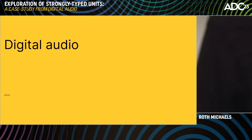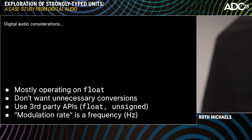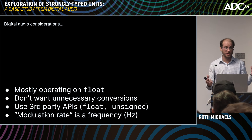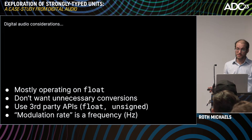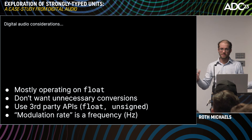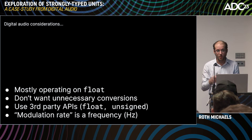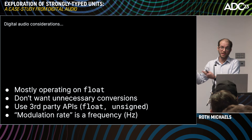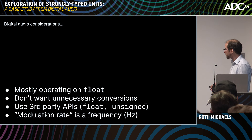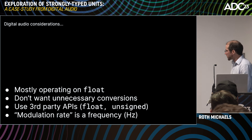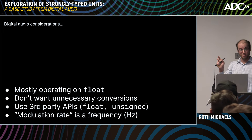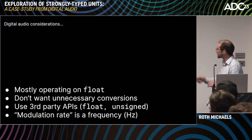Now let's get into why we're actually here: digital audio. We're mostly operating on floats, and that's a key feature of the MP Units library — like std::chrono, you get to pick your representation type. A lot of units libraries always use double underneath, which wastes time and space and may cause unnecessary conversions. We don't want to change behavior or performance characteristics just by using new types. When dealing with third-party APIs, they might give us floats and unsigned integers. Modulation rate is often talked about as hertz in this industry — according to ISO they're technically different, but interchangeable for us.